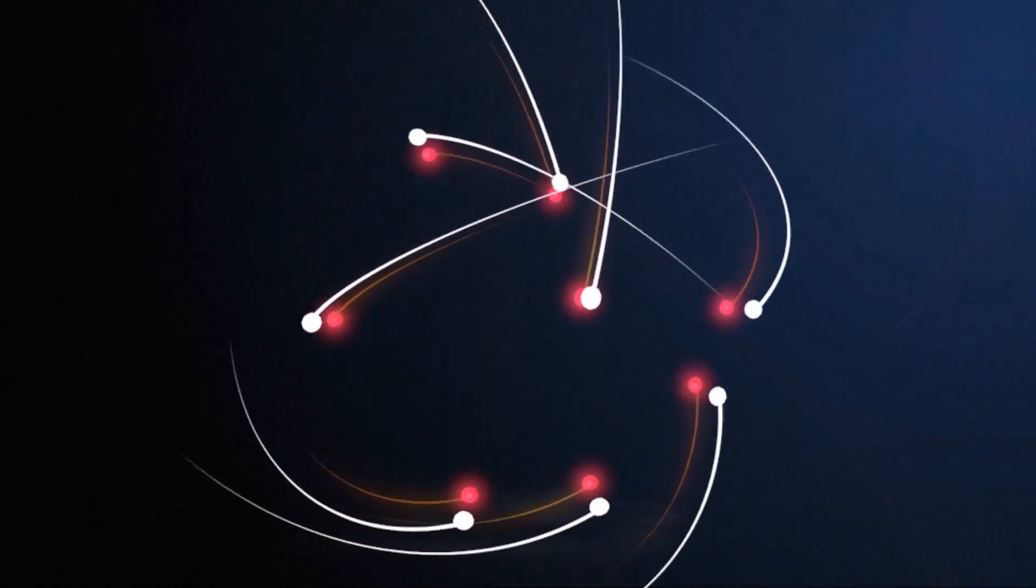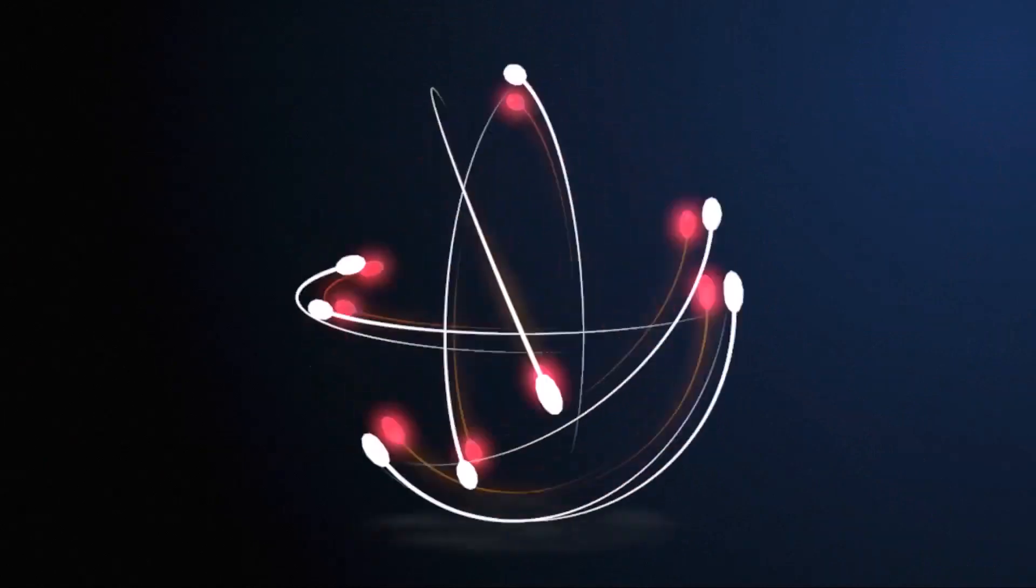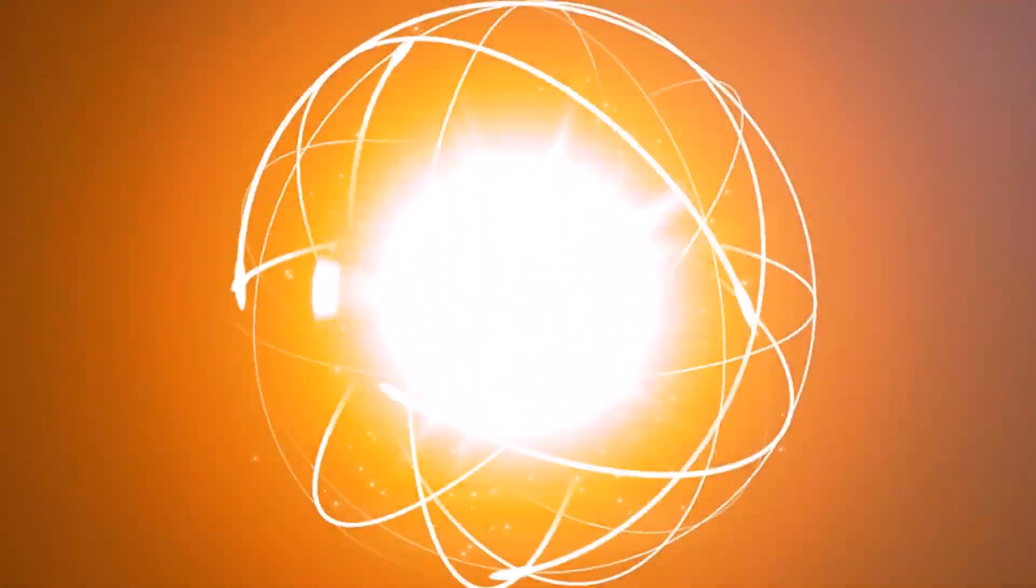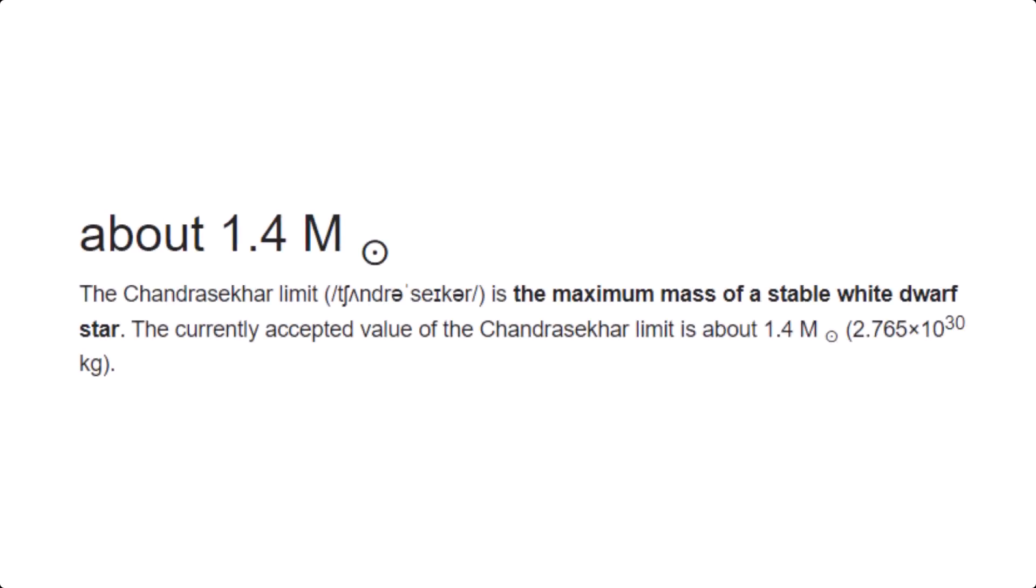Interestingly, white dwarves which I mentioned earlier, use electron degeneracy pressure to hold themselves up. This is similar to the neutron degeneracy, but involves the electrons of the material resisting being in the same state. This works really well for low mass stars below the Chandrasekhar limit of around 1.4 solar masses. Above this limit, electron degeneracy pressure fails and cannot prevent further collapse.